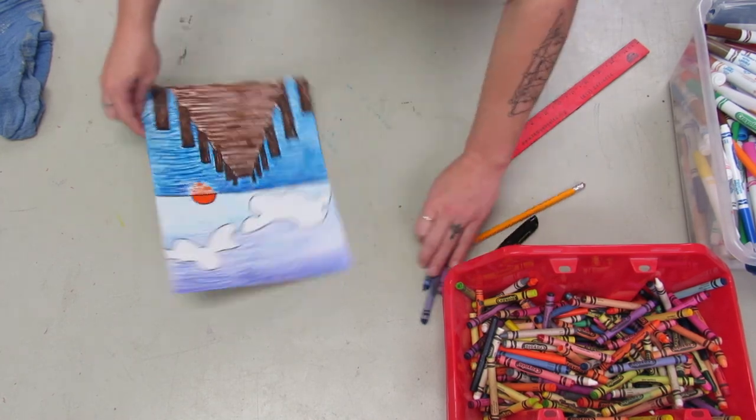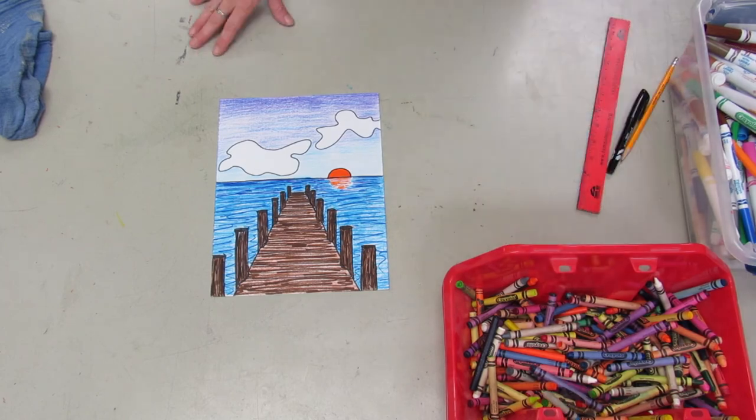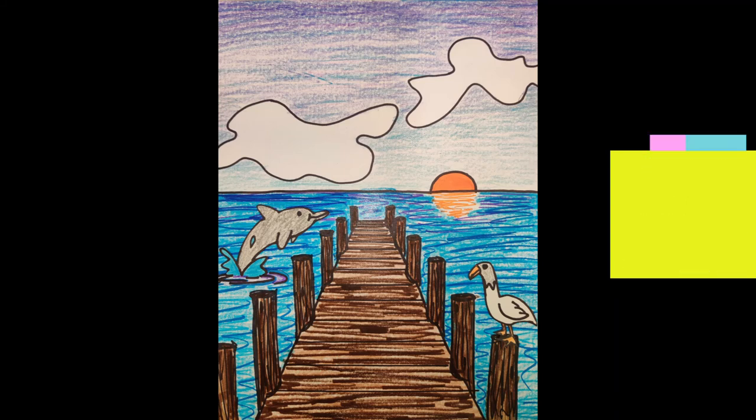I'm just gonna tidy it up and erase some of those old lines, and here's my final picture. So I added some extra details—I actually drew a seagull and a dolphin jumping out of the water on a different piece of paper and then cut them out and glued them down.